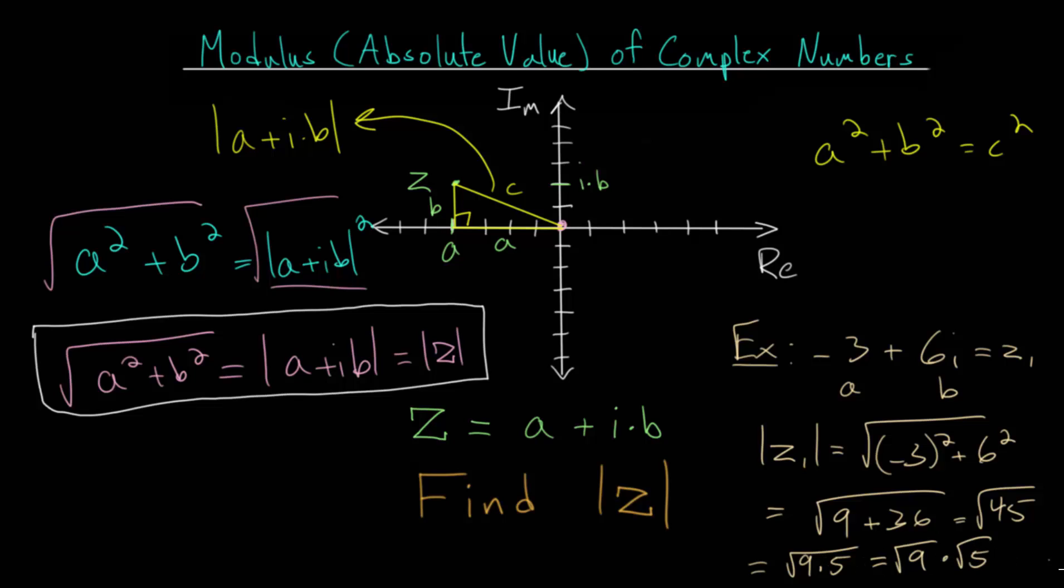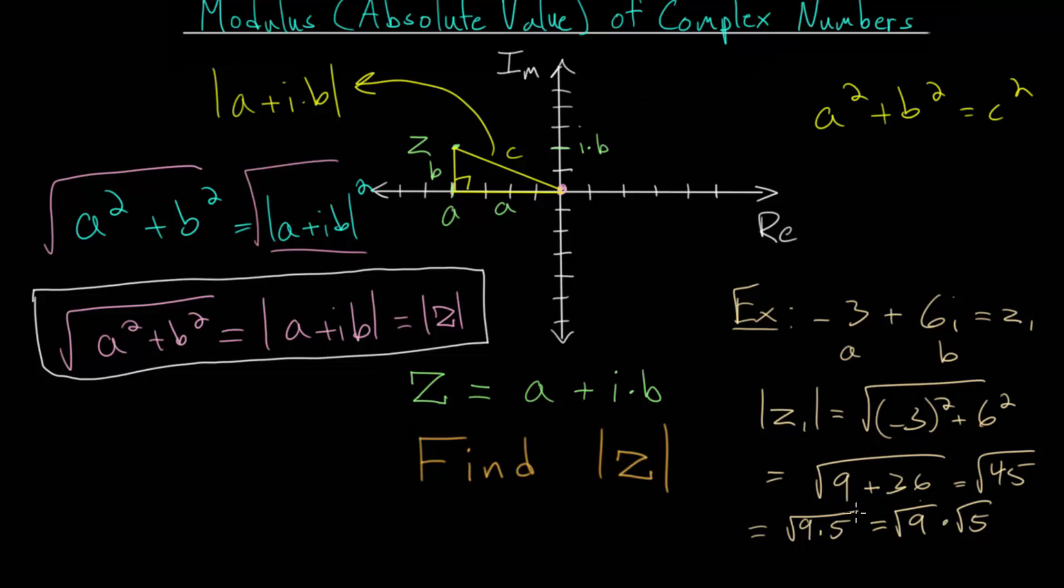we have root nine, multiplied by root five. And the square root of nine, we know is three, meaning that the modulus or the absolute value of this complex number is three times the square root of five.